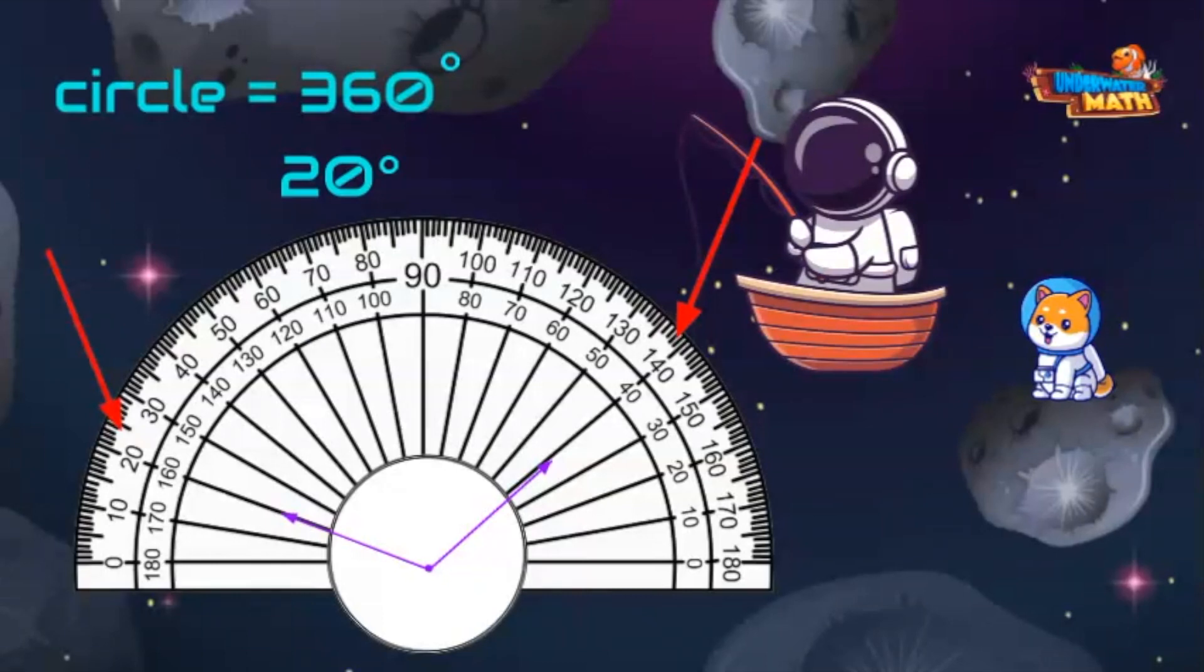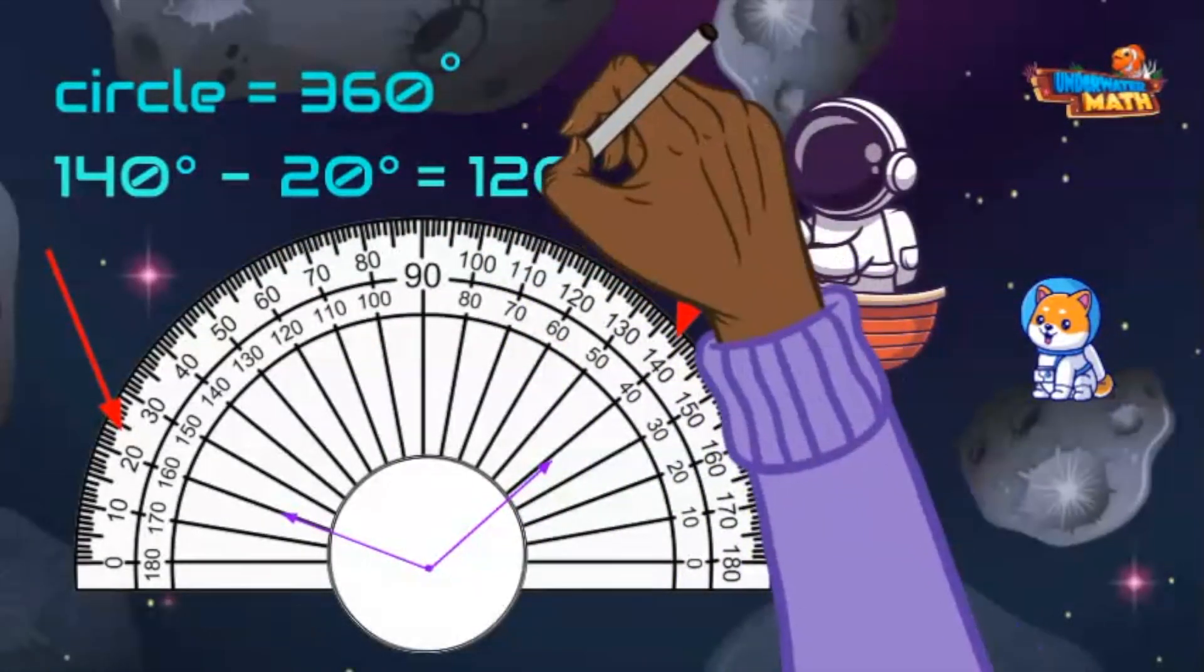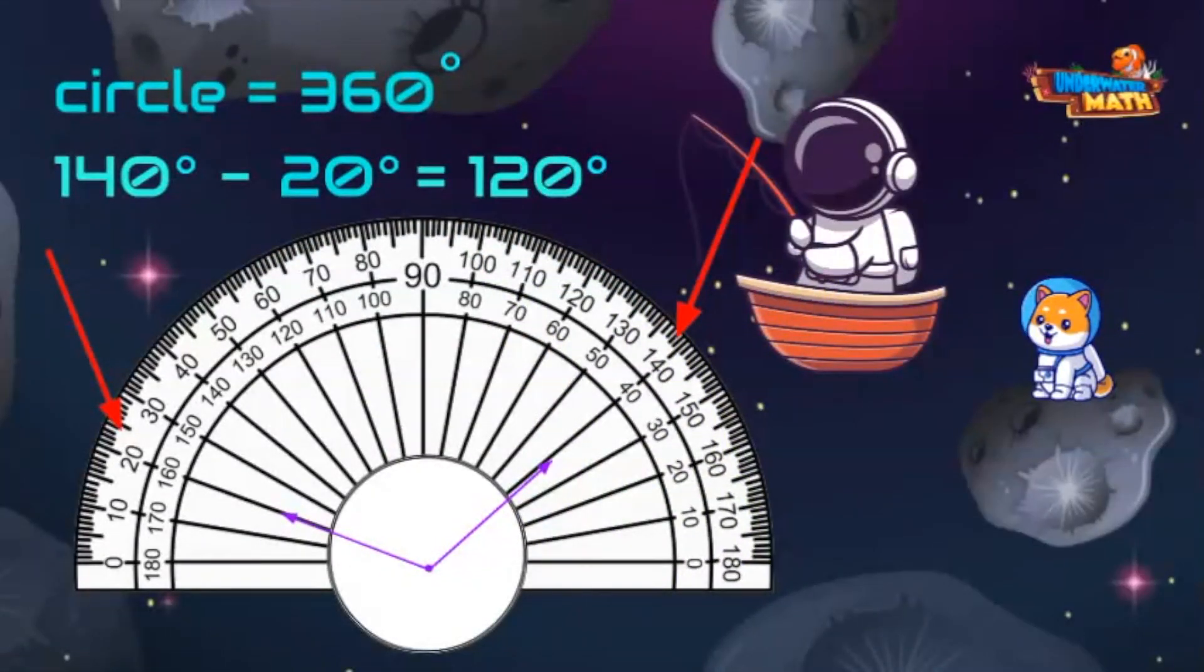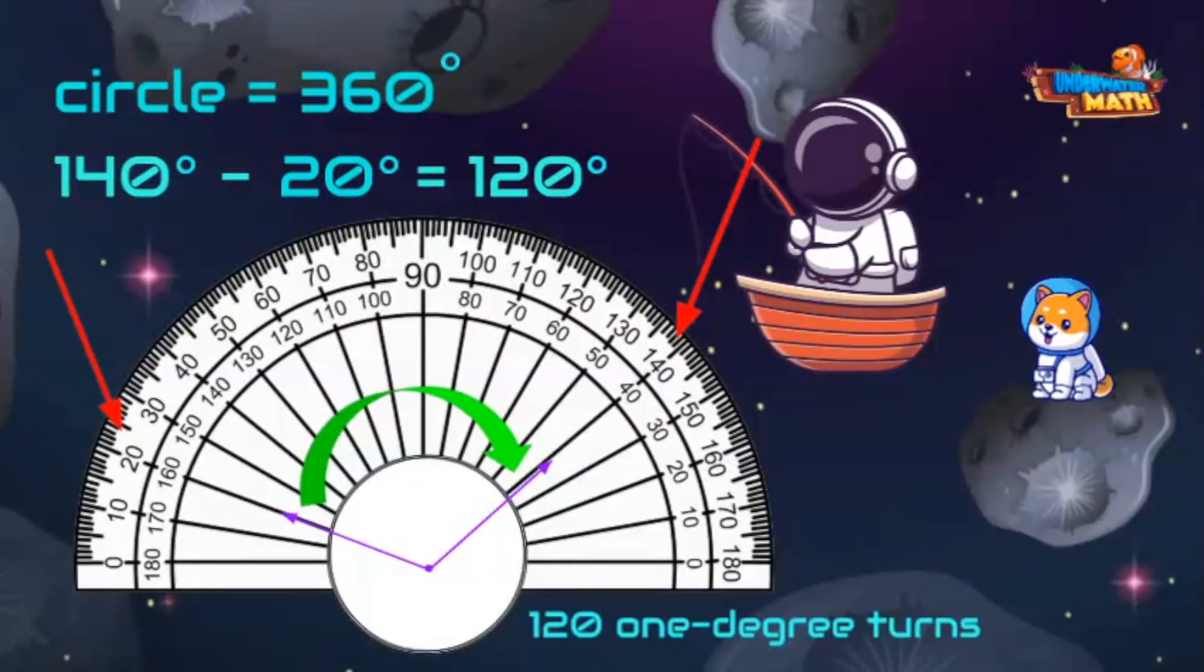Here we have 140 degrees. 140 degrees minus 20 is 120. This angle has a measurement of 120 degrees. Using the circle as a reference, this angle has gone through 121 degree turns.